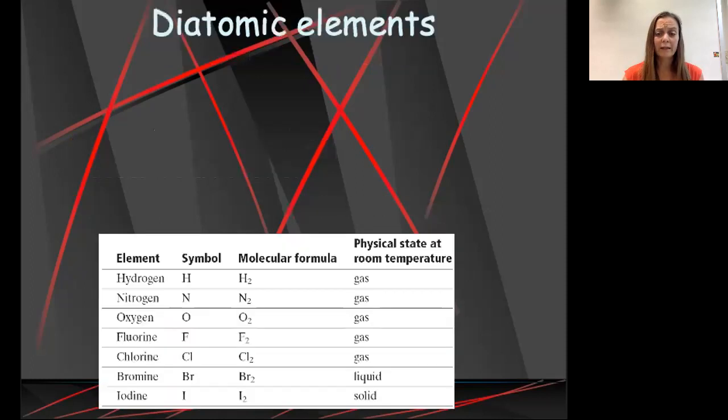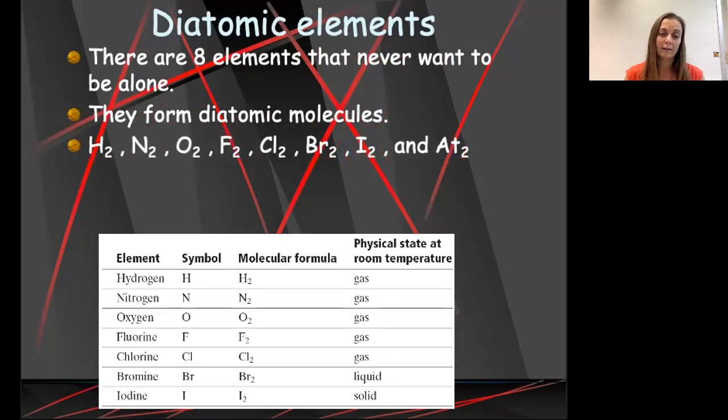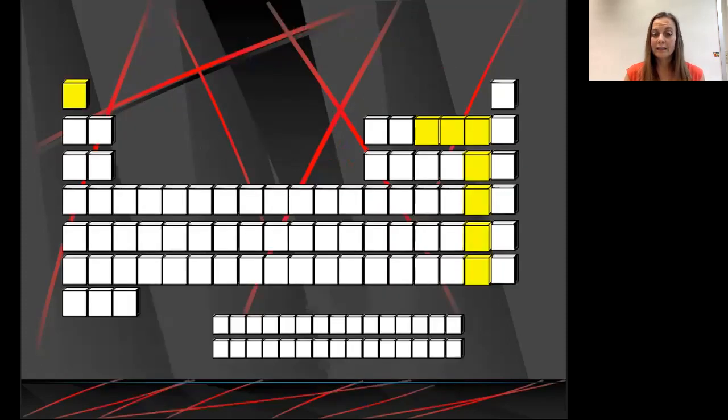Quick reminder before we start writing our chemical equations. We need to remember the diatomic elements. There are eight elements that never want to be alone. They form diatomic molecules when we use just that element in a reaction. They are hydrogen, nitrogen, oxygen, fluorine, chlorine, bromine, iodine, and astatine. We remember them on our periodic table that these are the H-N-O and the halogens. Or we can remember that there are eight of them and it looks like a 1 and a 7.